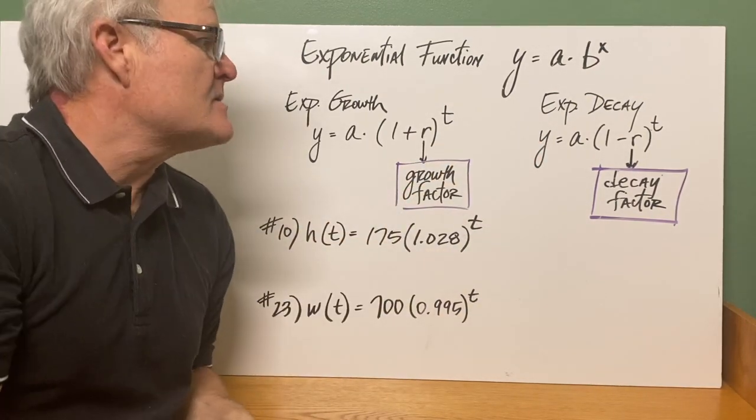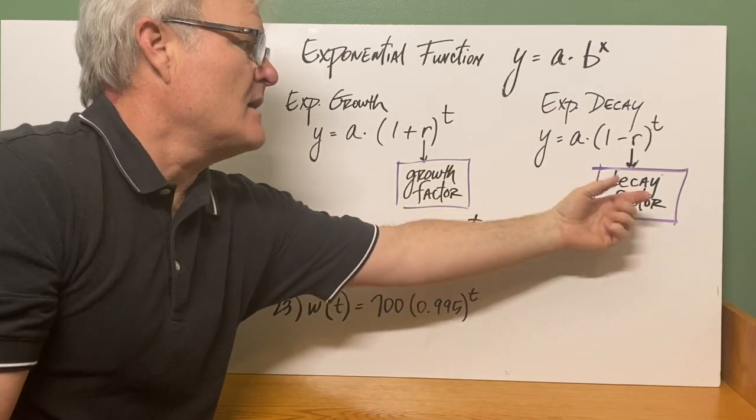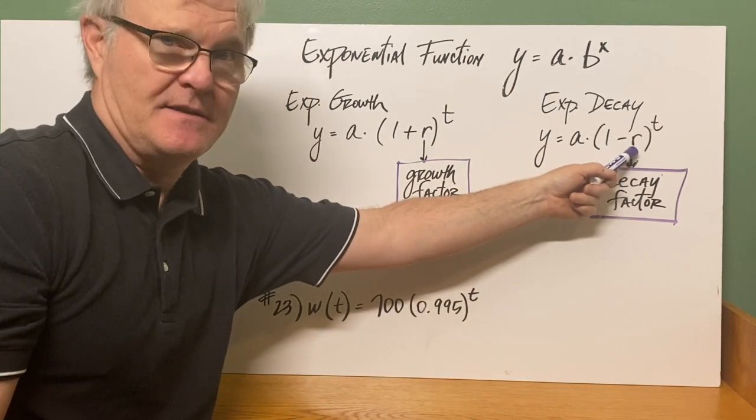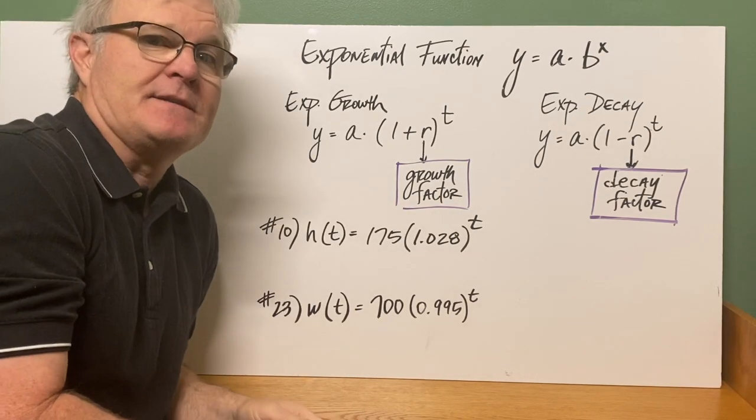Exponential decay is y equals a times 1 subtract r, which would be your decay factor. So this is the amount that it is less than 100%. This is how much greater than 100% it is.